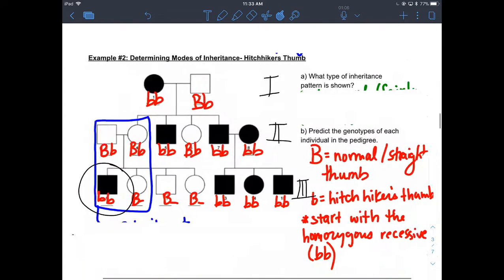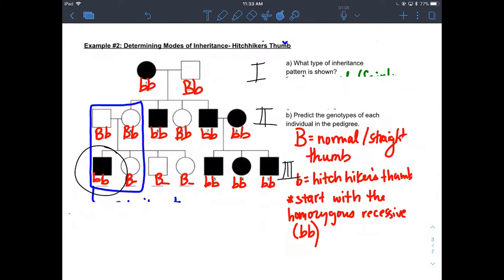So another example I want to look at with you is this hitchhiker's thumb question, example two. I wanted to look over this question with you because I think it's important that we understand that we can differentiate between the type of patterns of inheritance based on who's affected and who's not affected. So when we look at this diagram and we look at this pedigree, we have a lot of individuals who are affected and it's a pretty even split male and female. I think there's one more male or two more male.